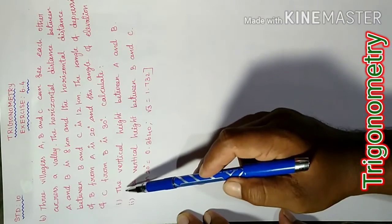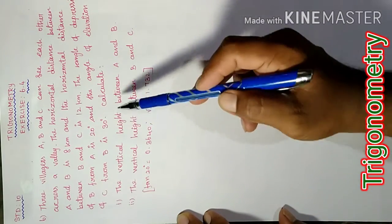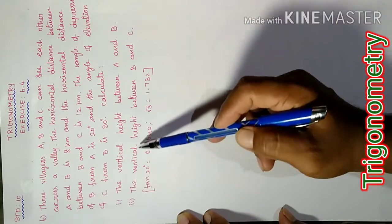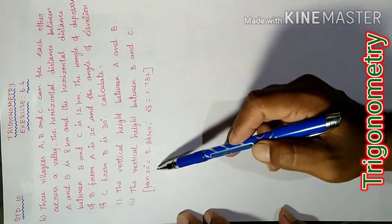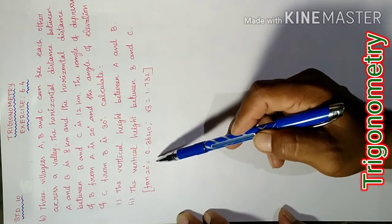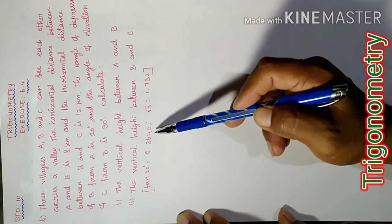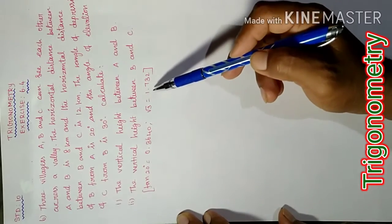Calculate: first question, the vertical height between A and B. Second one, the vertical height between B and C. Given: tan 20 degrees equals 0.3640, root 3 value equals 1.732. For your information, your book will have pictures.